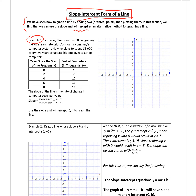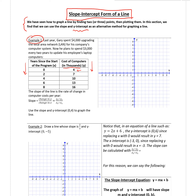Let's look at Example 1. It says: last year, Gary spent $4,000 upgrading the local area network (LAN) for his company's computer system. Now he plans to spend $3,000 every two years to upgrade his employees' laptop computers. We have a column on the left for years since he started the program, and on the right, how much this is costing the company. Keep in mind those numbers are in thousands, so a 4 means $4,000, not $4.